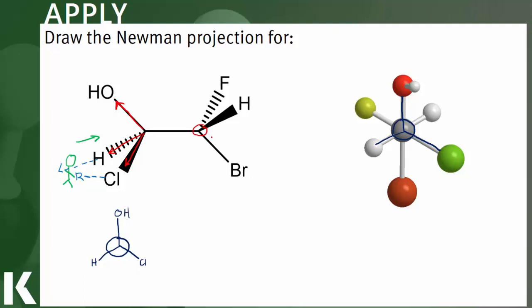It's kind of like if you're standing in front of your house, you can't see the back of your house because the back of your house is blocked by the front of your house. So it's the same idea here. As we're looking down this carbon-carbon bond, the front carbon is blocking the back carbon.